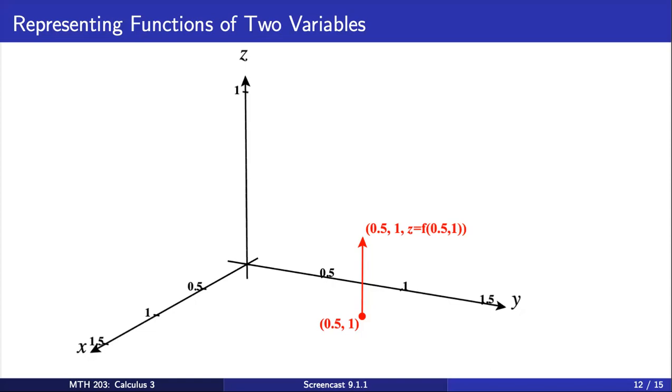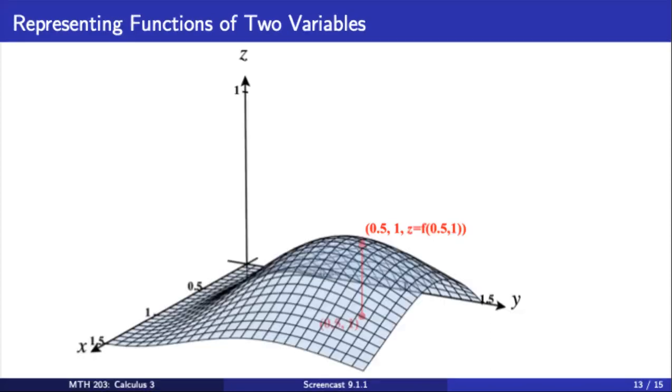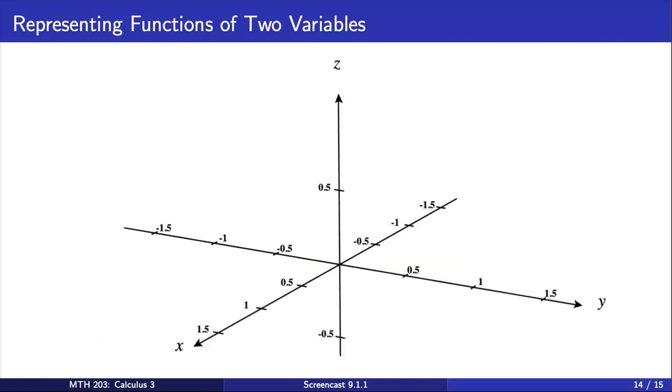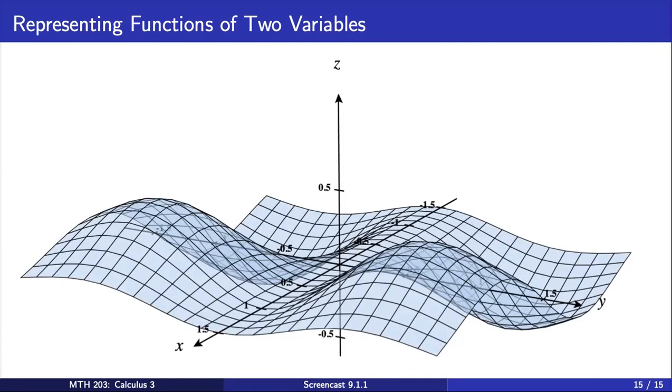If we do this for all ordered pairs (x, y) in the domain of f, and we connect all the resulting points, this forms a surface. Pictured here, we've chosen to display what the surface looks like just for some non-negative x and y values. But we can also graph this function for negative x and y values in the domain. And to do that, to give you an idea of what that would look like, we can extend the coordinate axes in the negative direction and plot points from the surface there as well.